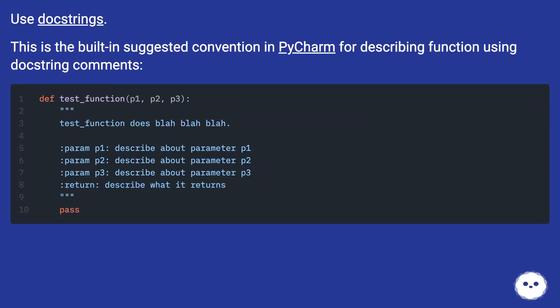Use doc strings. This is the built-in suggested convention in PyCharm for describing a function using doc string comments.